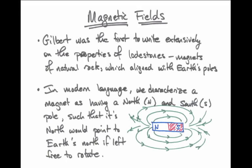In modern language, we characterize all magnets as having a north pole and a south pole, and we define the north pole of a magnet as that which would point towards the geographic north pole of the Earth if suspended on a string. Magnets are often symbolized with north and south written on either end of a bar, and field lines describe the shape of the force to be exerted on another magnet placed nearby.